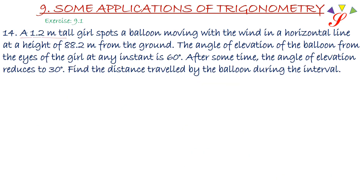A 1.2 meter tall girl spots a balloon moving with the wind in a horizontal line at a height of 88.2 meter. The angle of elevation of the balloon from the eyes of the girl at any instant is 60 degree. After some time, the angle of elevation reduces to 30 degree, meaning the balloon has moved. Find the distance travelled by the balloon during the interval.